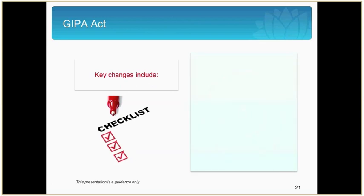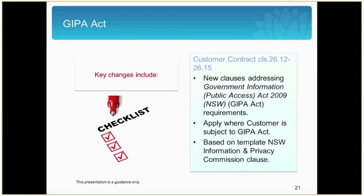There are now new provisions to address legislative requirements under the Government Information Public Access Act 2009, that is the GIPA Act. These are clauses 26.12 to 26.15 of the customer contract and apply where the customer is subject to the GIPA Act. These clauses adopt a similar approach to the Information and Privacy Commission template contract wording in relation to section 121 of the GIPA Act. If the customer is not subject to GIPA, the parties can note that the relevant clauses are not applicable in the general order form.